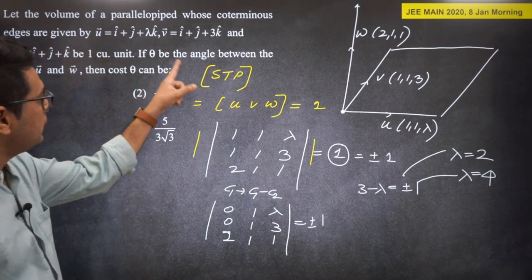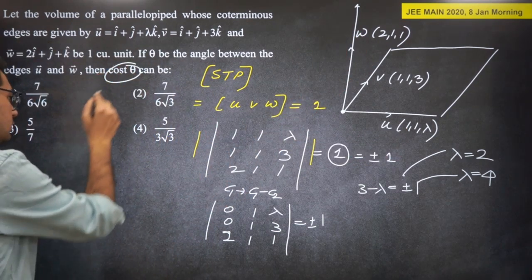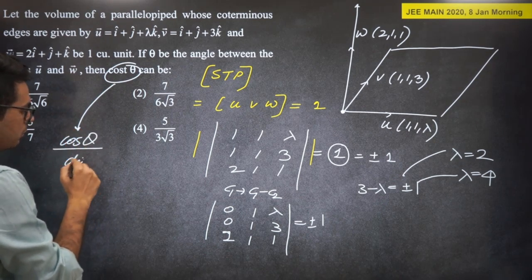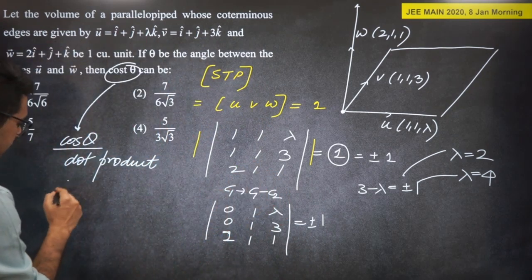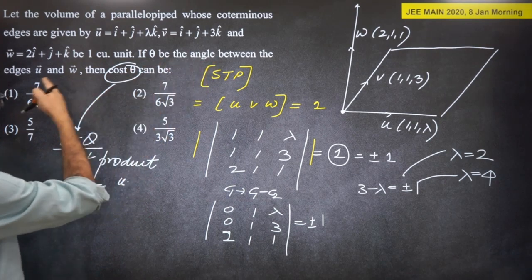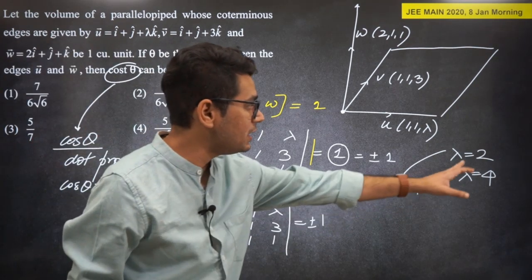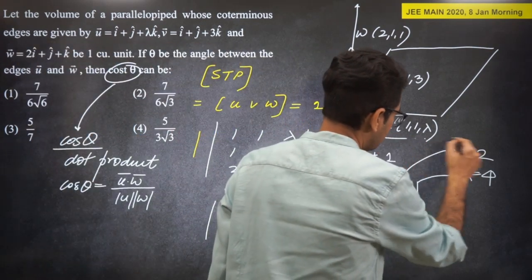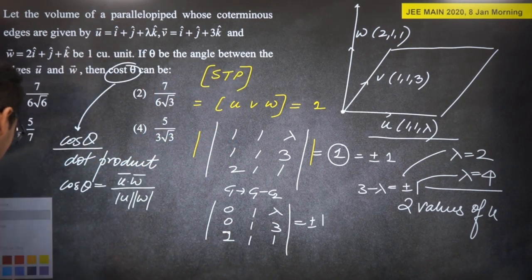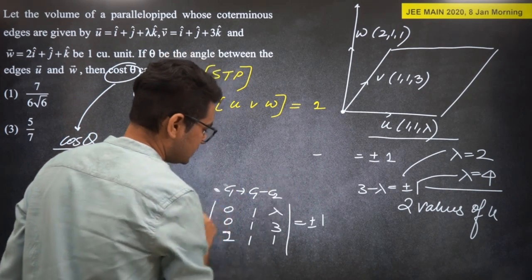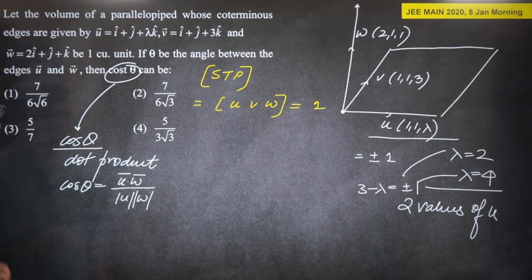Now we need cos(theta) where theta is the angle between edges U and W. This comes from dot product: cos(theta) = U·W / (|U||W|). Since lambda has two values (2 or 4), U has two possible forms. We must check both values — don't assume one value works.